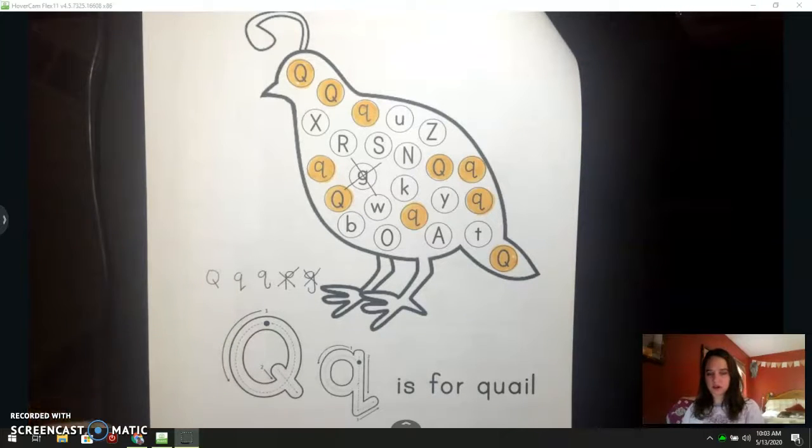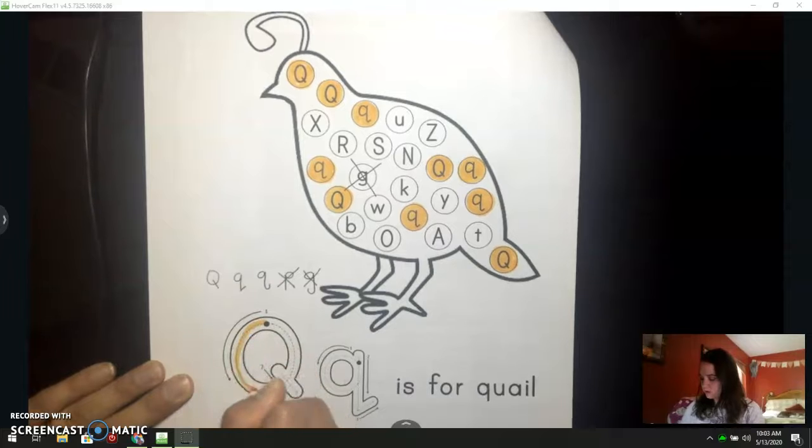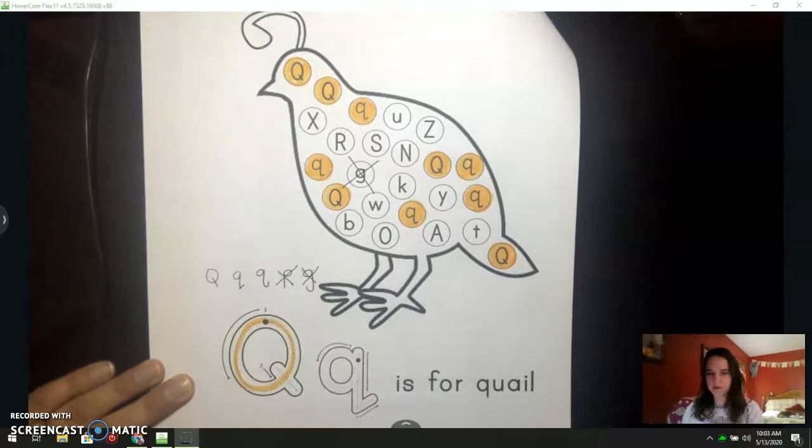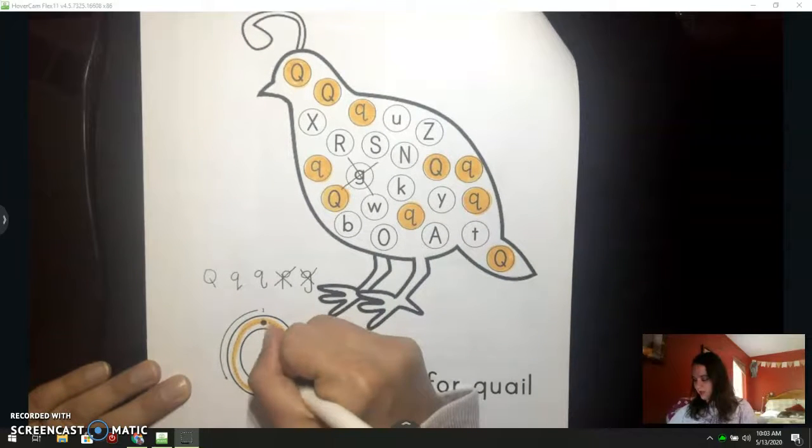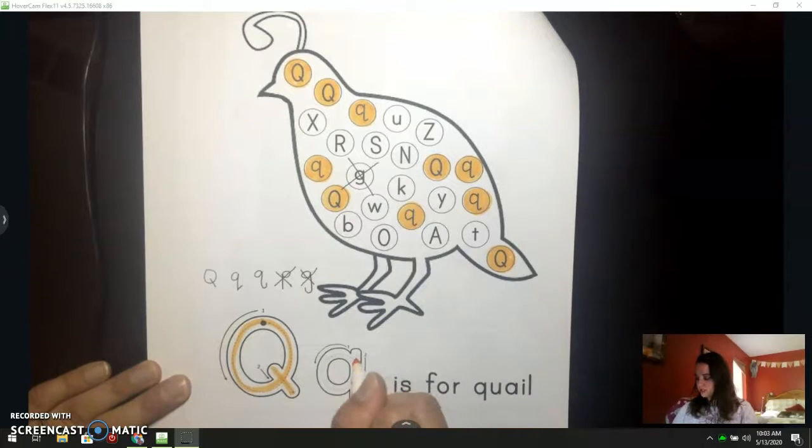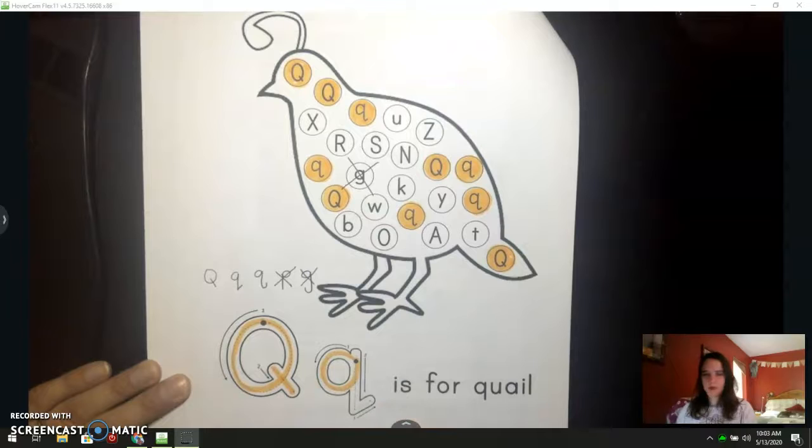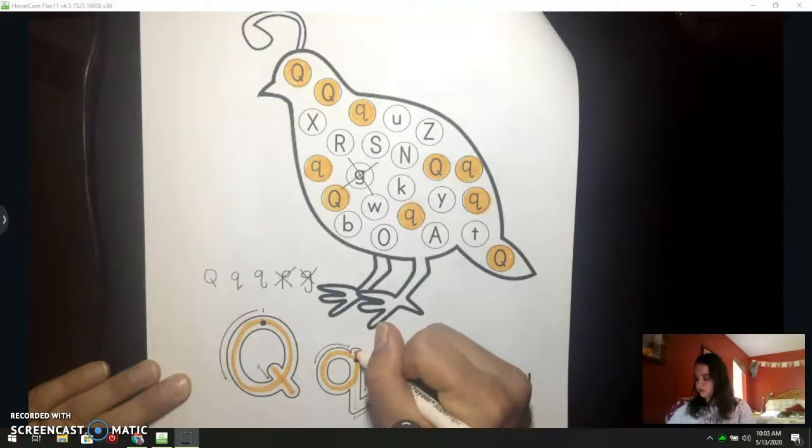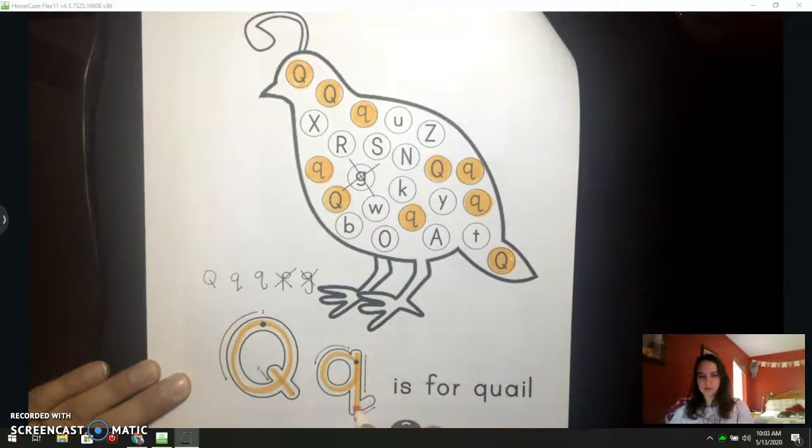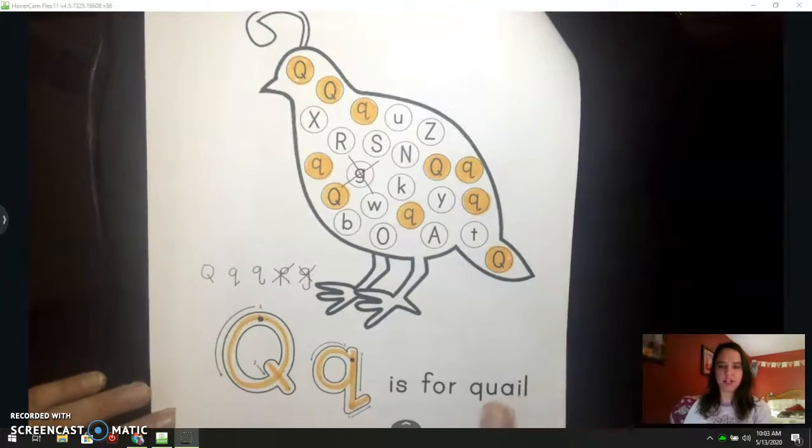For our uppercase Q, we always start our letters at the top dot. Go round, all the way around, make a circle, and then frog jump back to make your little line down. This one, it wants us to start with our circle, go all the way back up, frog jump to the top, straight line down, stop sign, little line up. Good job on your Qs for quail page. Flip your packet over.